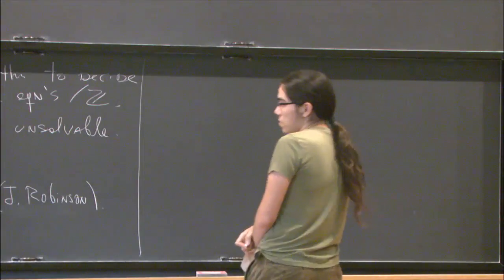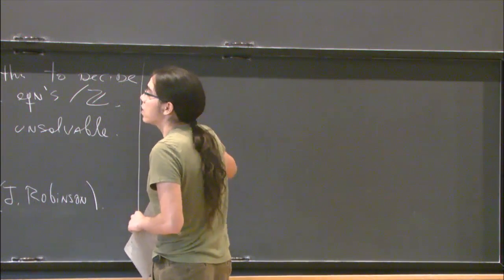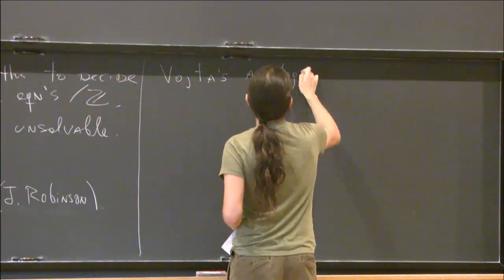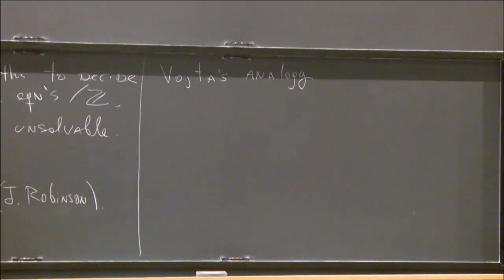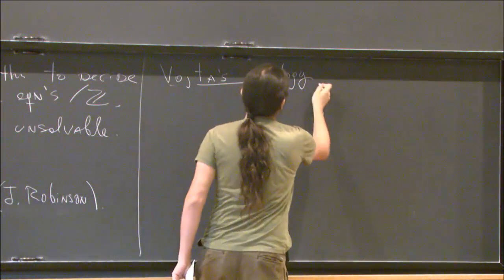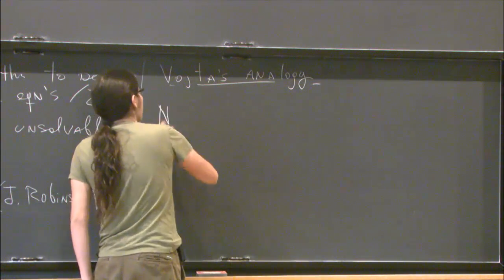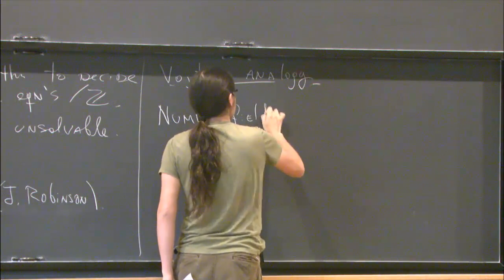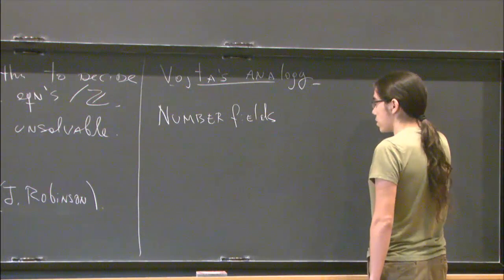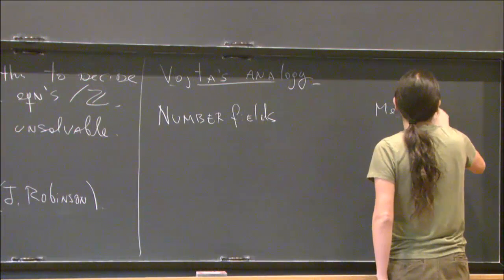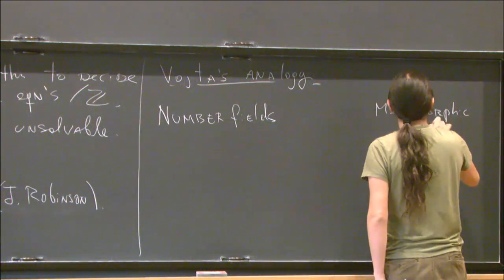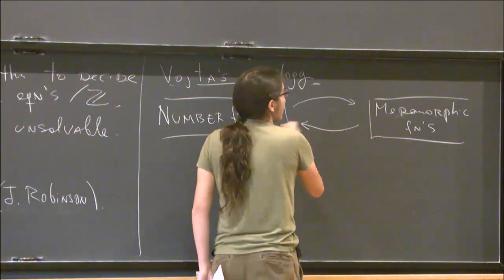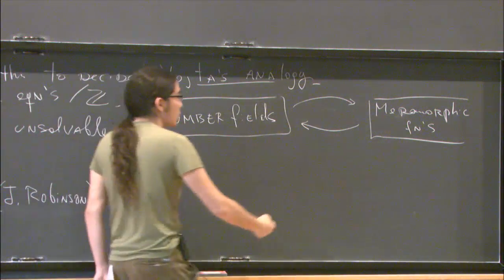So let me say a little bit about the point of view I take with respect to these problems. I like to think that Vojta's analogy will tell you something in this case. I will not give the full statement here, because that's a topic for a whole lecture, but in simple words, if you want to study Diophantine statements about number fields such as Q, you can relate this, at least formally, to meromorphic functions.